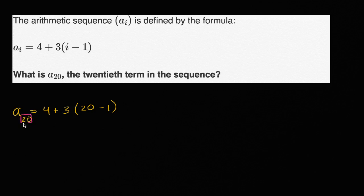A sub 20 — instead of a sub i, wherever we saw an i, we put a 20. And now we can just compute what this is going to be equal to.